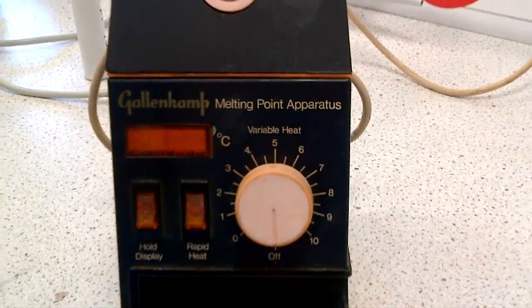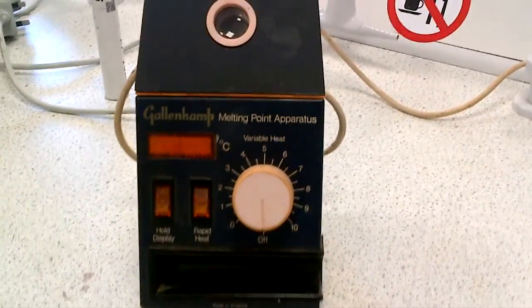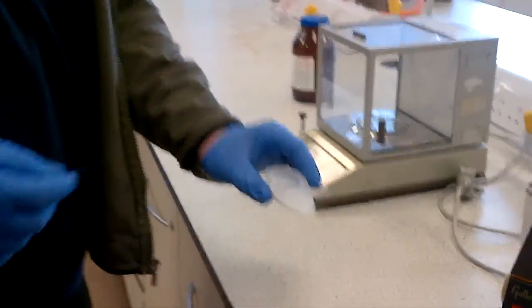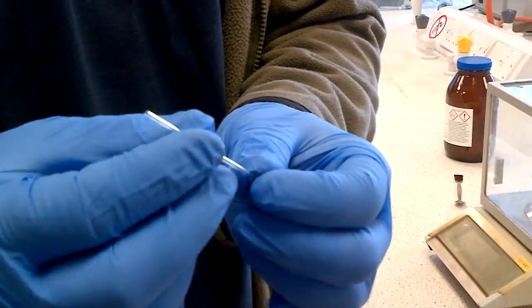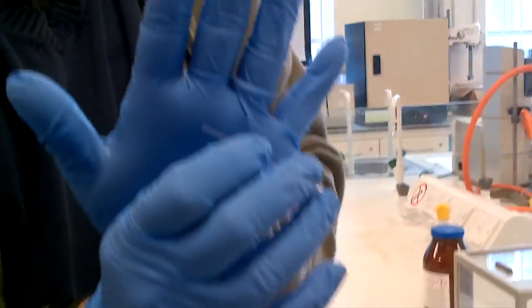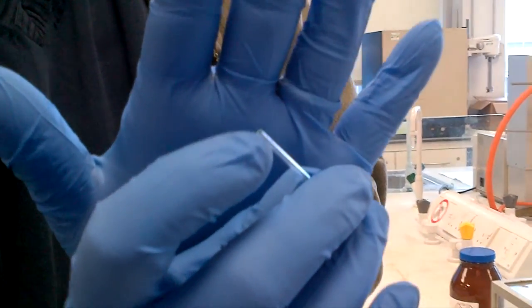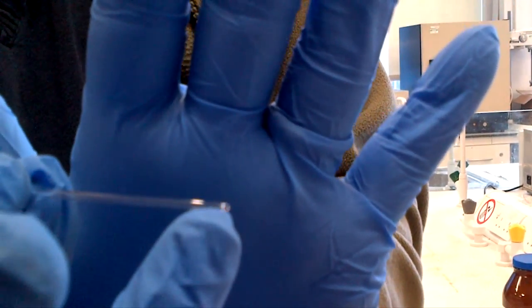So we'll just turn it off for the moment, let it cool down, while we show you how to make the sample up. So inside of here there is some salicylic acid, and there is a melting point tube as well that fits into one of the three openings. The melting point tube, I'll just show it with a glove, there is an open end and there is a sealed end, and the sealed end goes down that way.